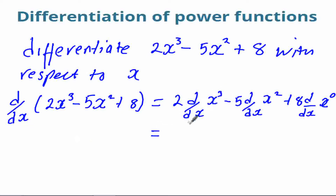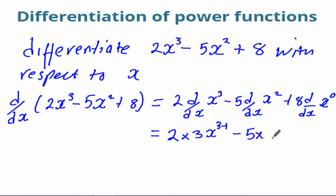So we differentiate using our formula — remember very well. That will be 2 times 3 comes in front, x to the power 3 minus 1, minus 5 times 2 comes in front, x to the power 2 minus 1, then plus 8 times 0, x to the power 0 minus 1.